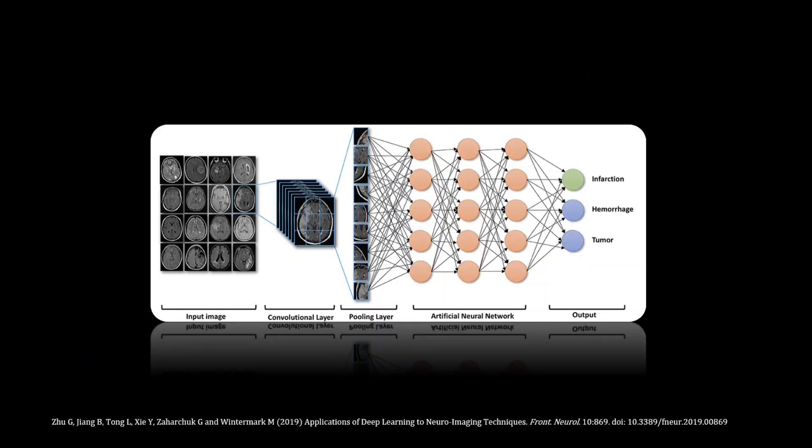So if we wanted to predict whether someone has a disease or not from an MRI scan, then we can use a convolutional neural network for that. Alternatively, we can analyze DNA sequences.